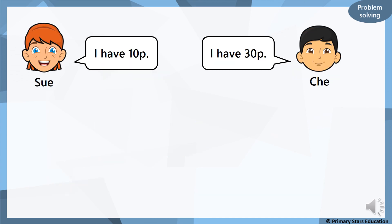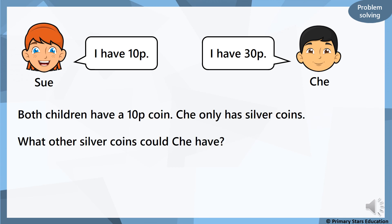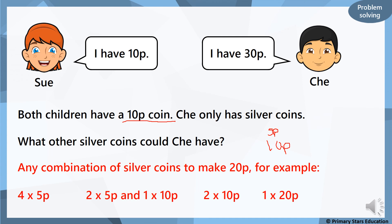Sue has ten pence and says she has thirty pence. Both children have a ten-pence coin. She only has silver coins — what other silver coins could she have? Think about five-pence and ten-pence coins and what combinations make twenty pence. We could have four five-pence coins (five, ten, fifteen, twenty), or two five-pence coins and one ten-pence coin, or two ten-pence coins — sorry, three ten-pence coins — or one twenty-pence coin and a ten-pence coin.